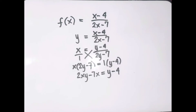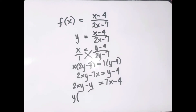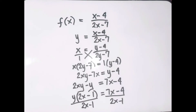Let us group all terms with the y variable on one side and all terms without y on the other side. Copy 2xy, transpose y, transpose negative 7x which becomes positive 7x, and copy negative 4. Now 2xy and negative y have a common factor y, so we factor out y: y times the quantity 2x minus 1 equals 7x minus 4. Next, divide both sides by 2x minus 1, which will be cancelled.